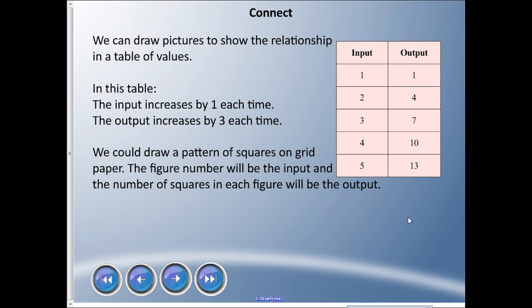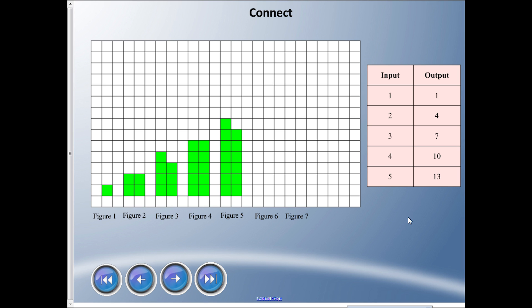We have a couple of goals today. Goal number one is to look at the connection between drawings and input-output tables. Looking at this input-output table first as a review of last lesson: the input pattern rule is we start at one and add one each time, and the output pattern rule is we start at one and add three each time. If I were to draw this on a grid with a pattern of squares, we should be able to draw more just based on the information we have.